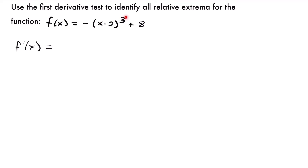Our outer function is the cubed quantity. So we're going to take the derivative of the outside function: negative 3 times x minus 2, and then subtract 1 from the exponent 3 to get 2. Then multiply by the derivative of the inside function, which is just 1. The derivative of 8 is 0, so that's our complete derivative: negative 3 times x minus 2 squared.